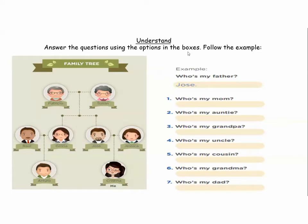Let's continue. Aquí tenemos la siguiente actividad. Answer the questions using the options in the box. Follow the example. Vamos a seguir el ejemplo para responder. En el primer ejemplo nos dice: who's my father? ¿Quién es mi papá? Está hablando Cristina. Miremos a Cristina — ahí está su árbol familiar con las fotos de su mamá, papá, tíos, primo y abuelitos.